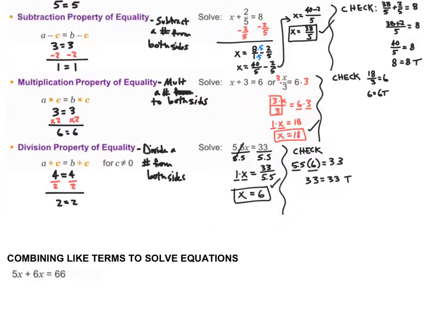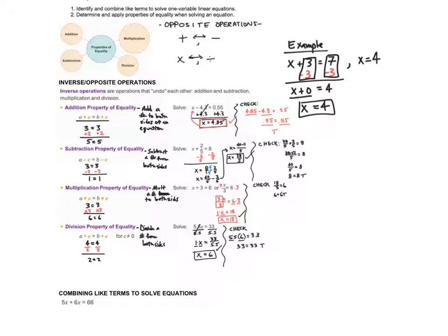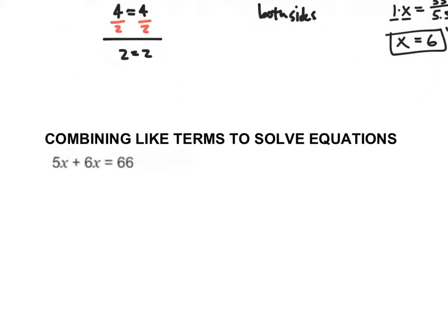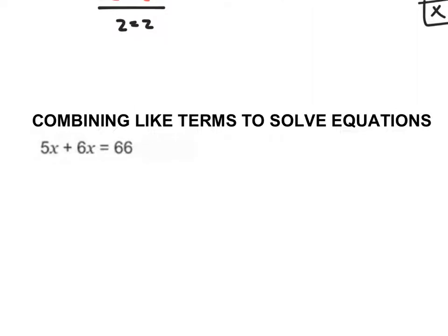That's how we do those problems. It's important that we understand how we use these opposite operations or inverse operations to help us solve equations. Now the last one on this page: we want to combine like terms to solve this equation. We have 5x plus 6x is equal to 66.